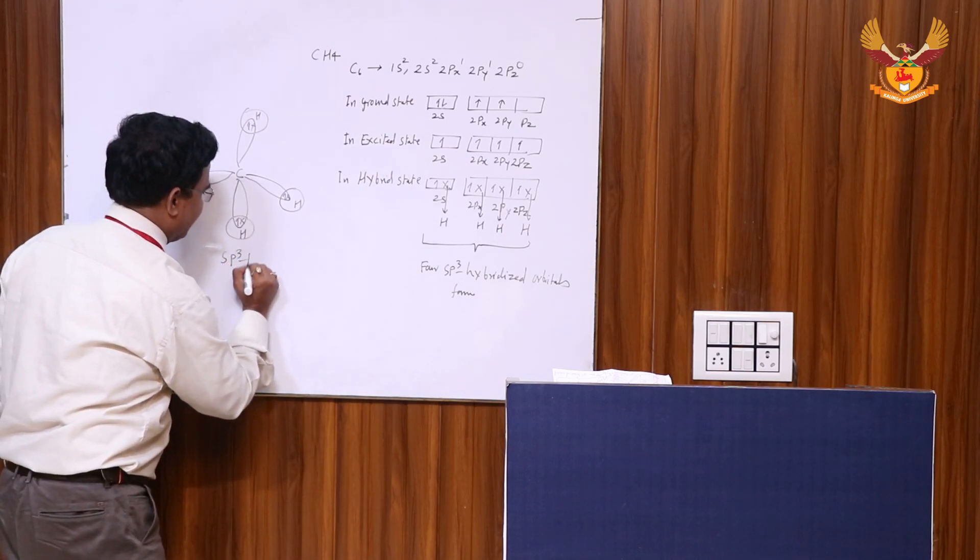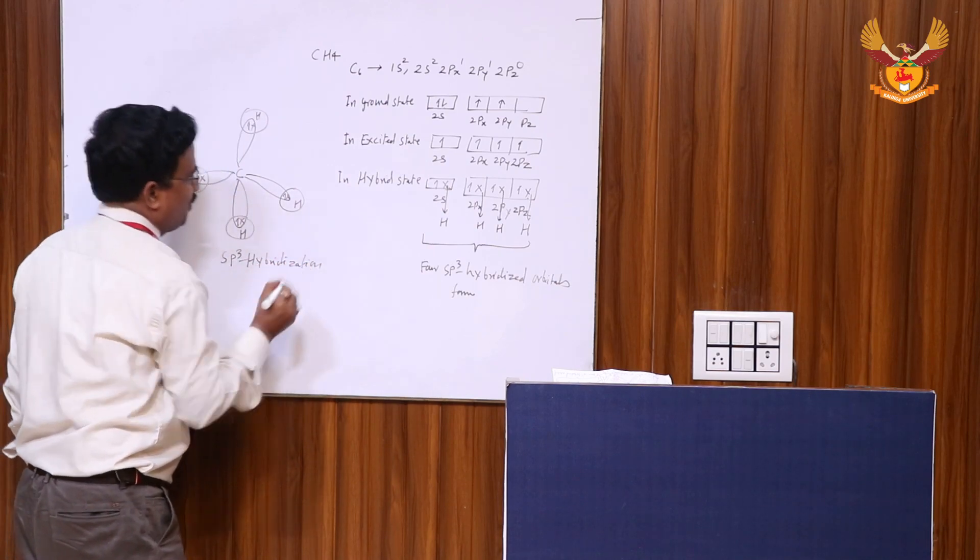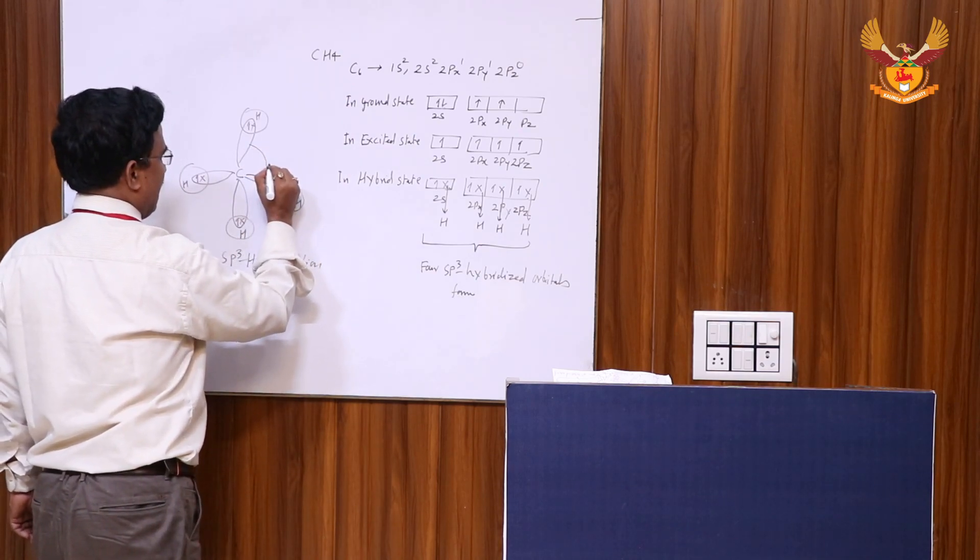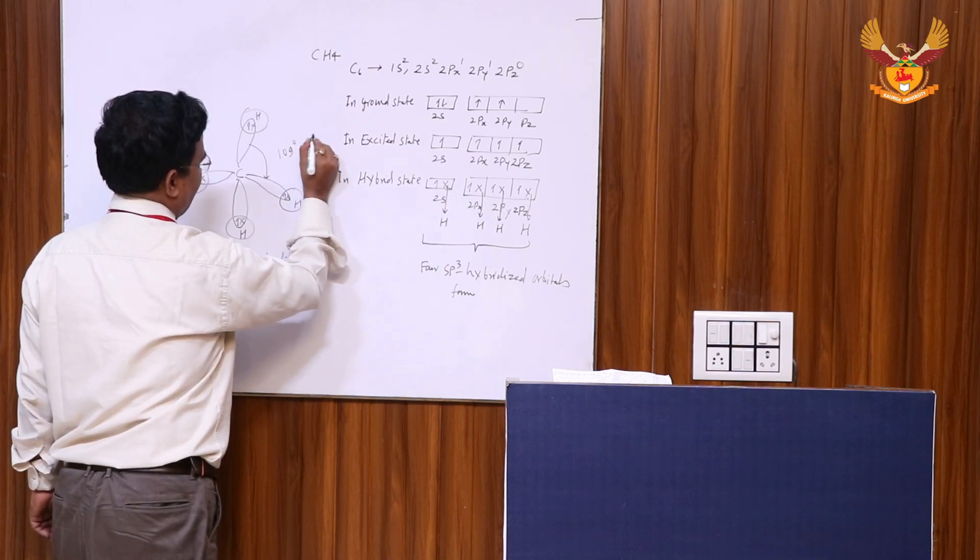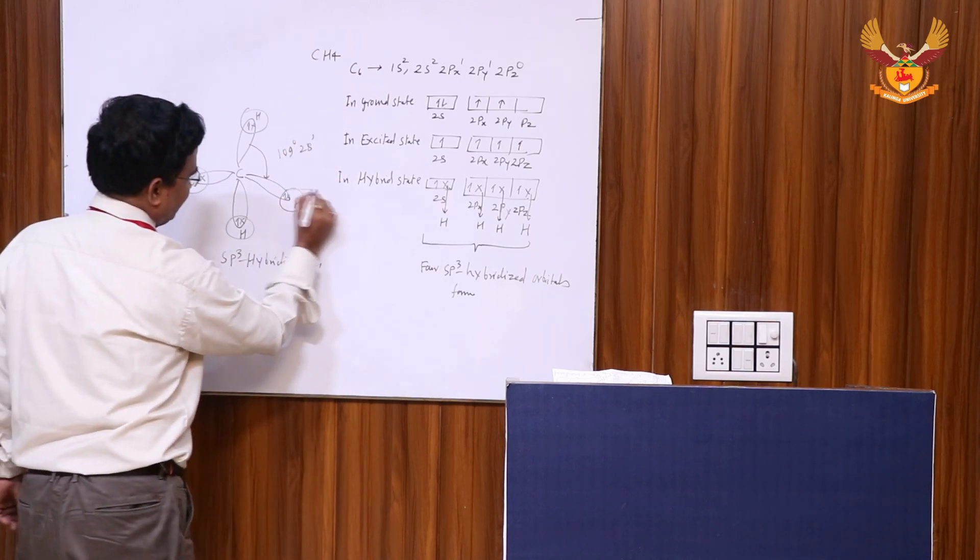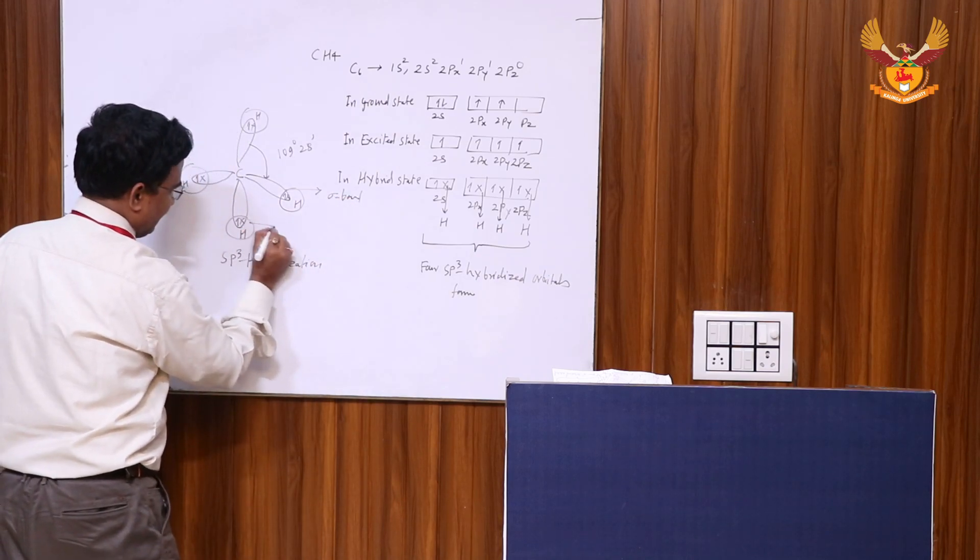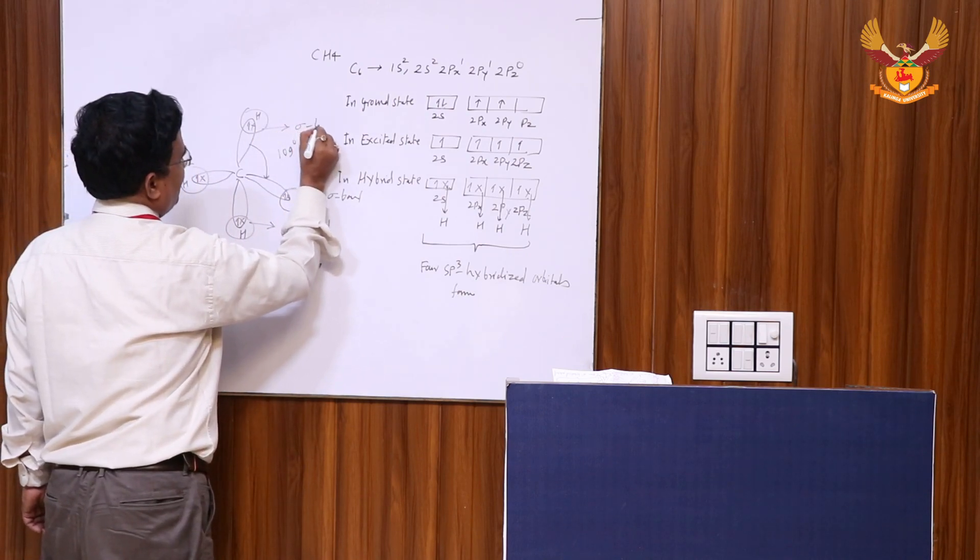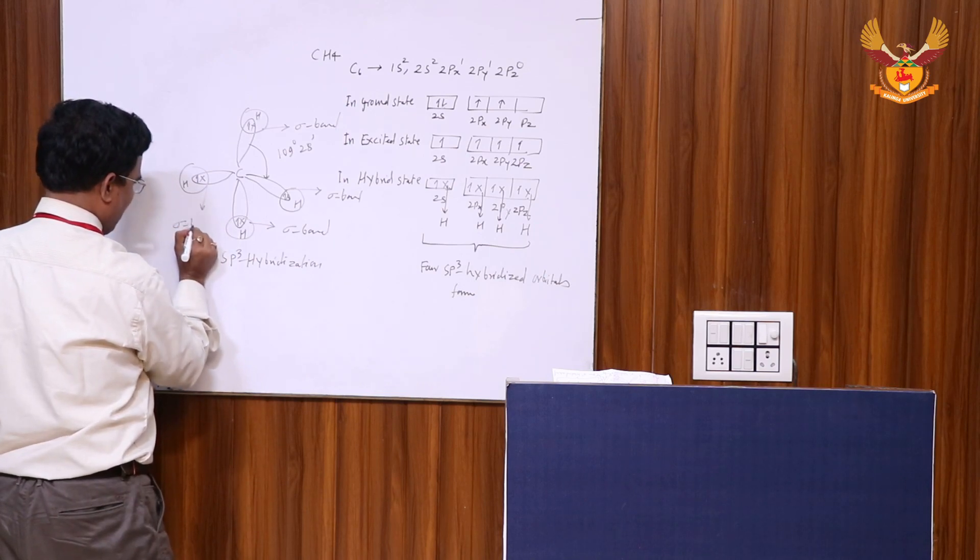In sp3 hybridization, the angle between orbitals is 109 degrees 28 minutes. This is the sigma bond, this is the second sigma bond, the third sigma bond, and the last fourth sigma bond.